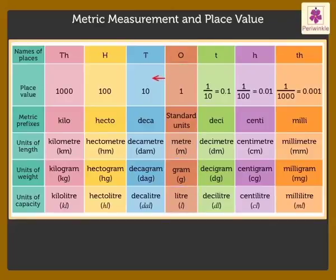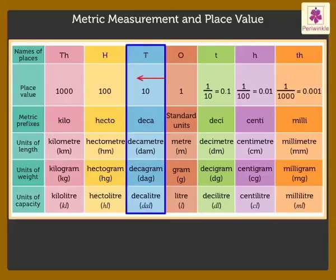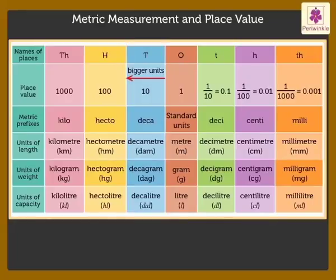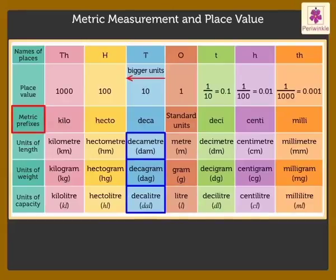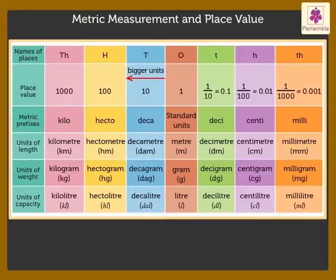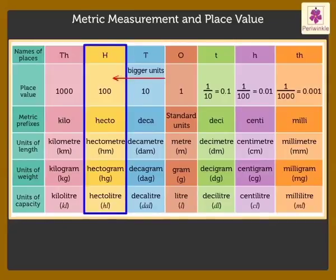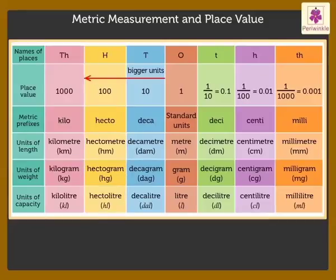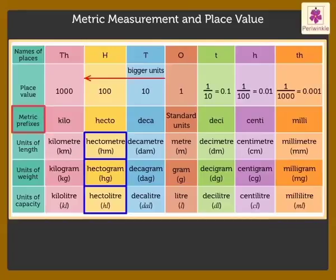As we move to the left, the units in the tens column are ten times bigger than the standard units. We name these as decameter, decagram, and decaliter, as the prefix 'deca' means ten times. The units in the hundreds column are one hundred times the standard units. We name these as hectometer, hectogram, and hectolitre, as the prefix 'hecto' means 100 times.